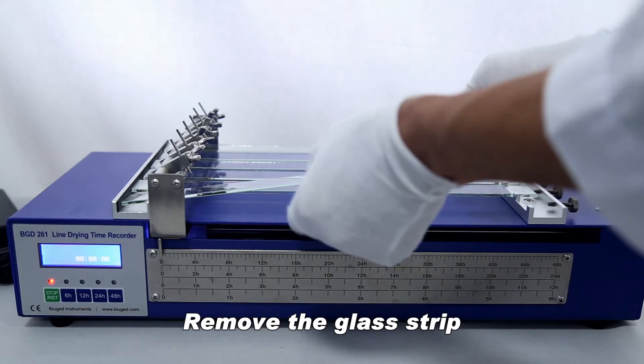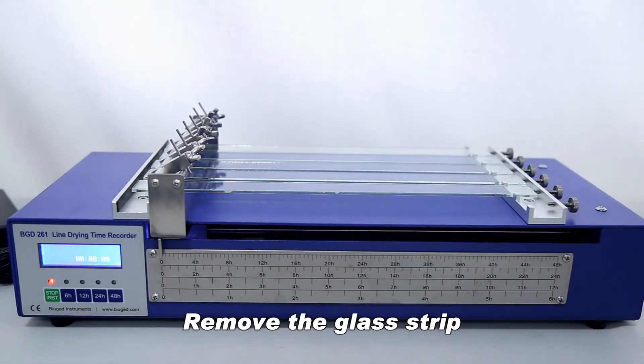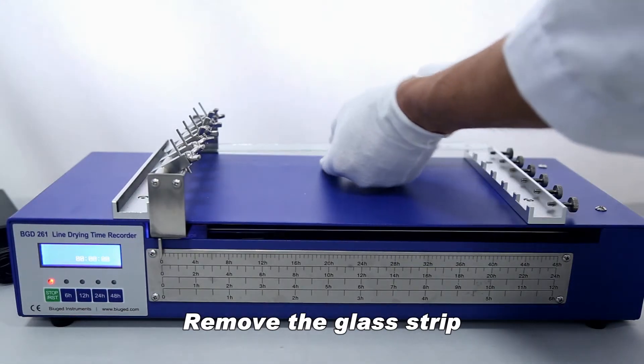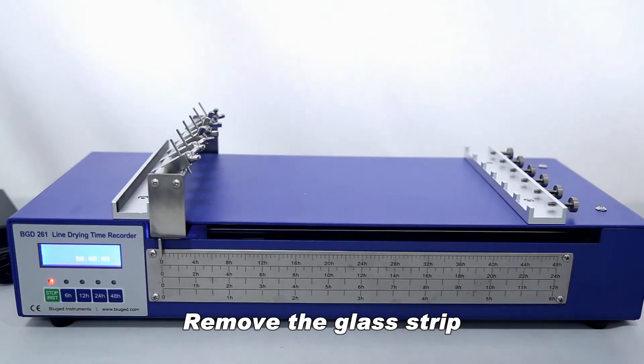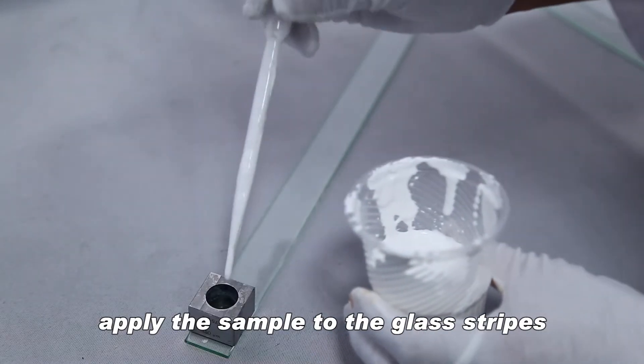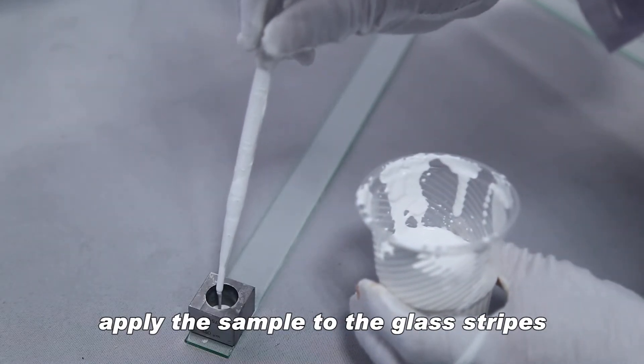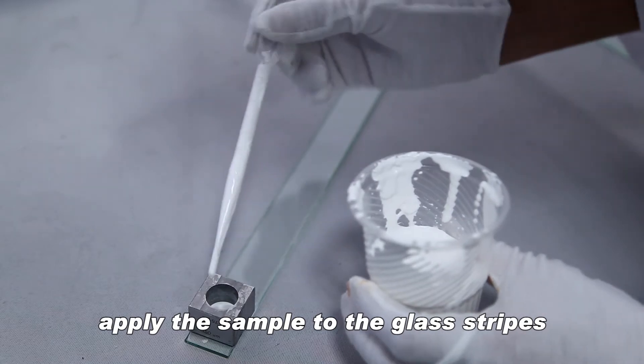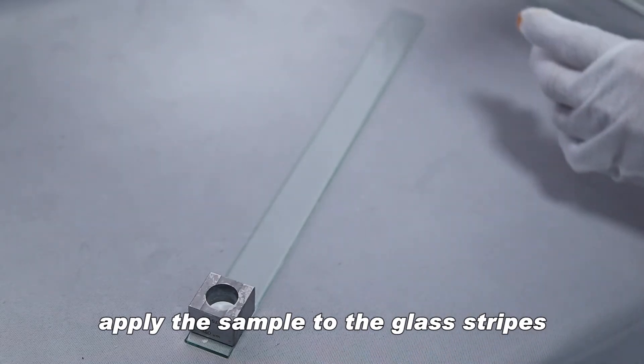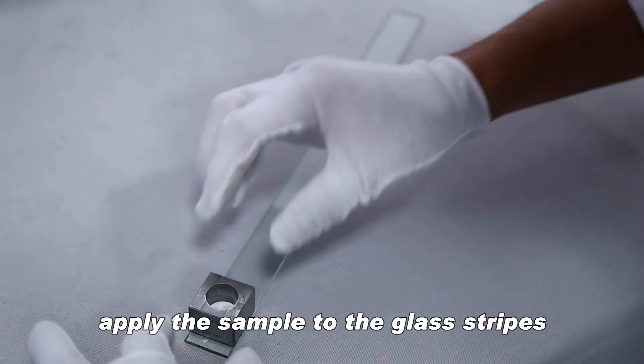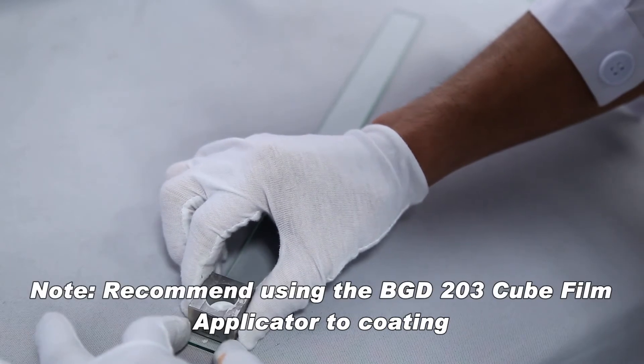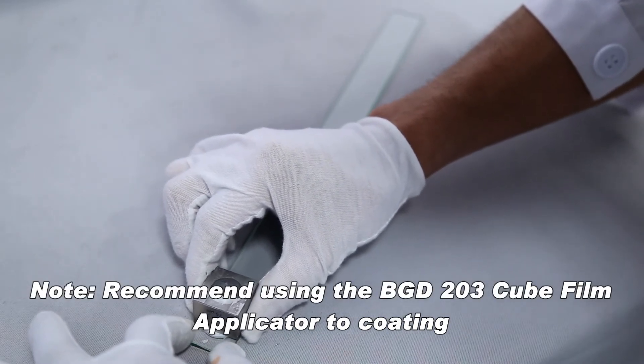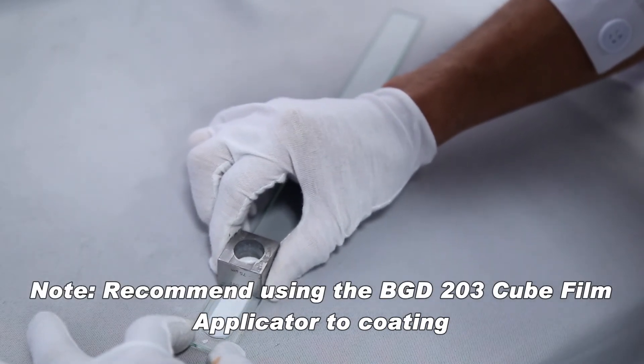Remove the glass strip. Apply the sample to the glass stripes. Note: recommend using the BGD-203 cube film applicator for coating.